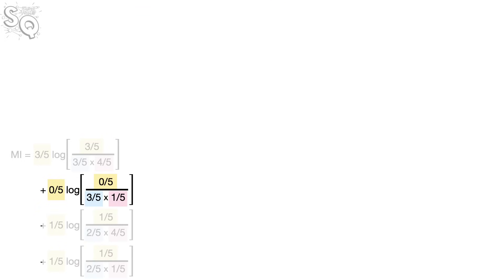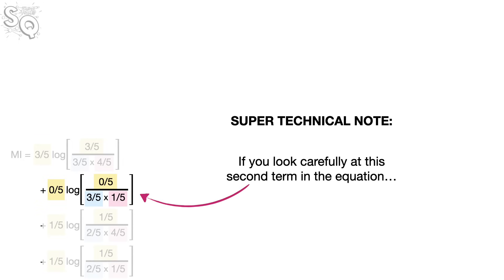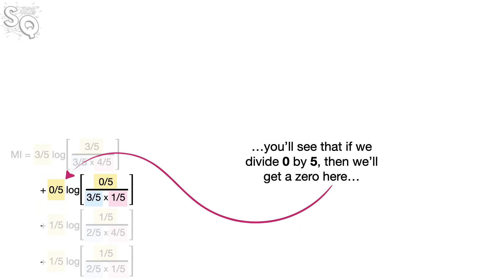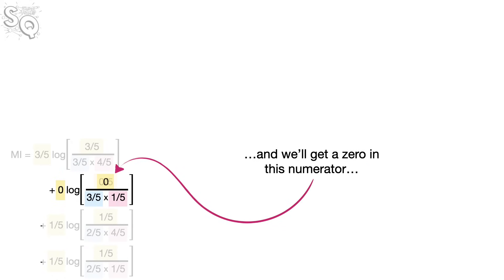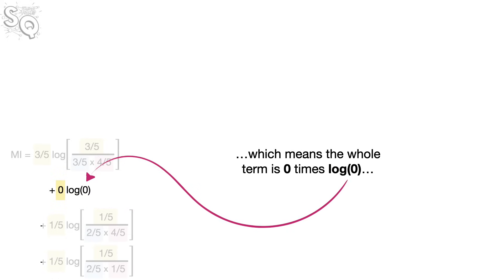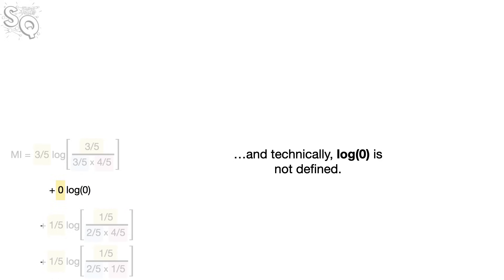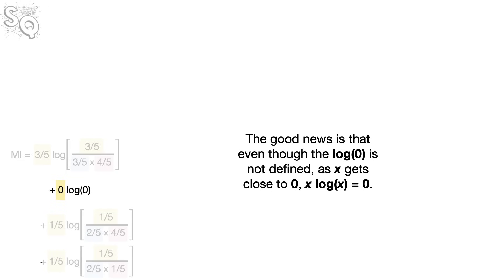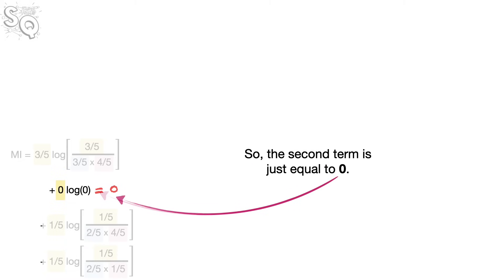One super technical note: if you look carefully at the second term in the equation, you'll see that if we divide 0 by 5, we get a 0 in the numerator, which means the whole term is 0 times the log of 0. Technically, the log of 0 is not defined. The good news is that even though the log of 0 is not defined, as x gets close to 0, x times the log of x equals 0. So the second term is just equal to 0.